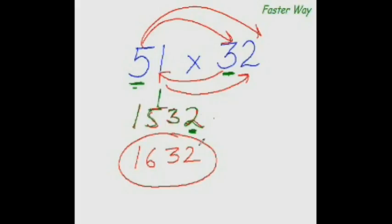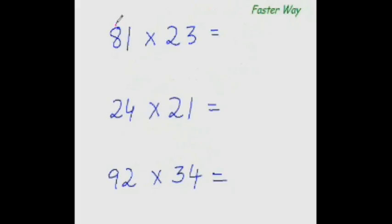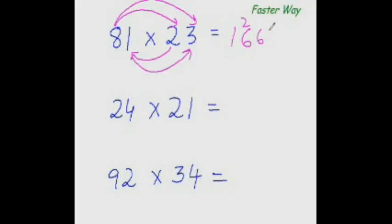Now let's practice more examples. With every example you practice, you'll remember this pattern of multiplication much better. 8 times 2 is 16 — put 16 here. 8 times 3 is 24 and 2 times 1 is 2; 24 plus 2 is 26. And 1 times 3 is 3. So the answer is 16 plus 2 is 1863.